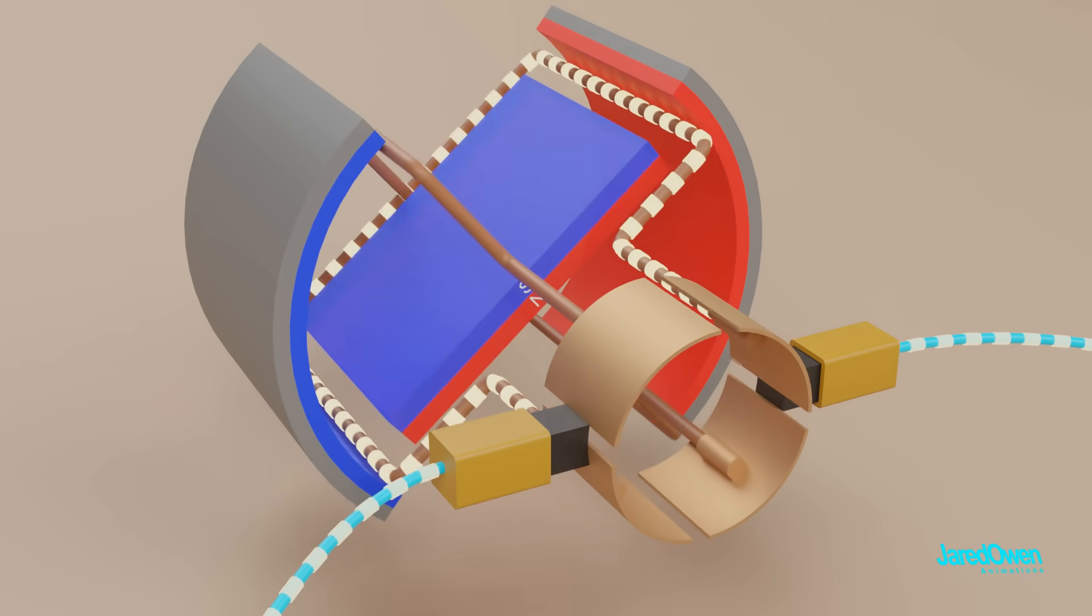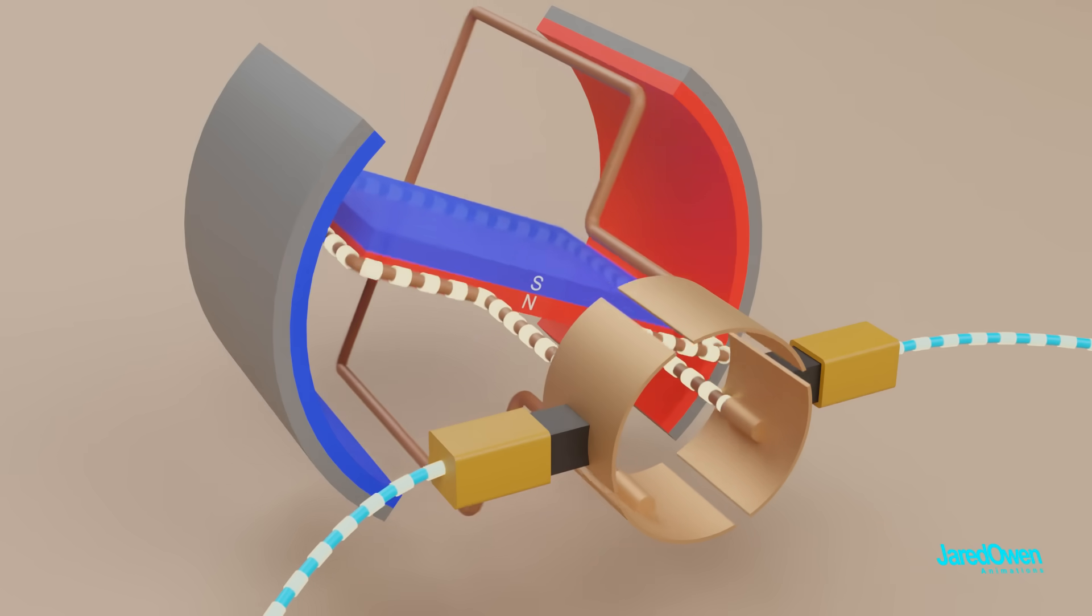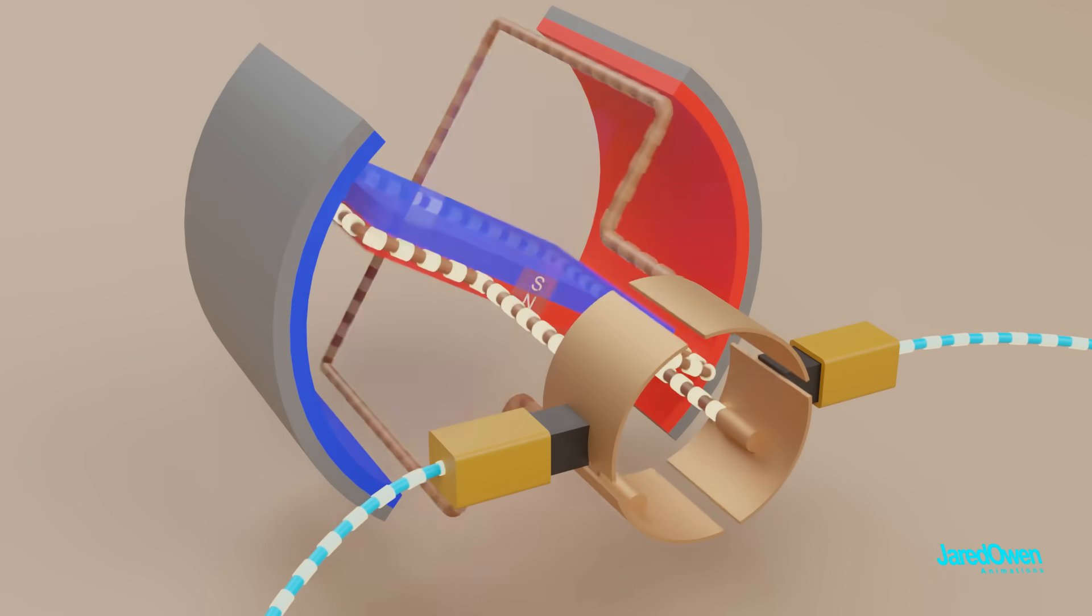The brushes switch contact, and the next loop turns on. This keeps happening as our motor spins. It's almost like the loops will take turns being an electromagnet.